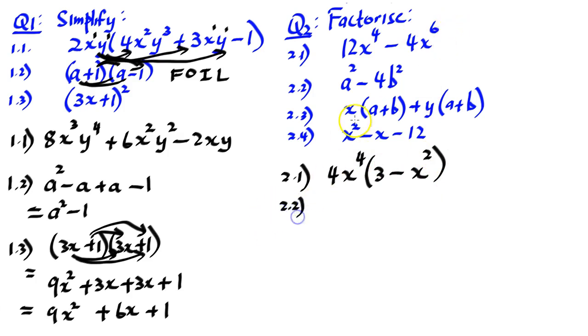2.2: We got a squared minus 4b squared. That is a perfect square minus a perfect square, called difference of two squares. We draw two sets of brackets because difference of two squares factors out to two binomials. The square root of a squared is a. The square root of 4b squared is 2b. One bracket must have a plus and the other one must have a minus. We must always check to see if we can factorize further.